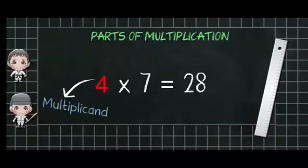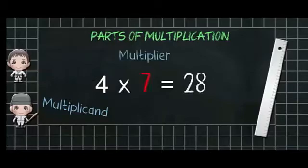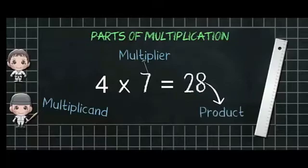Here 4 is the multiplicand and the number by which the multiplication is done is called multiplier. Here 7 is the multiplier and the result of multiplication is known as product. Here 28 is product.